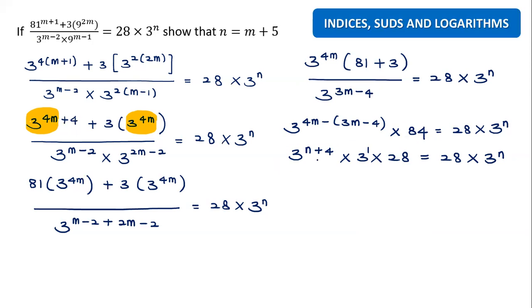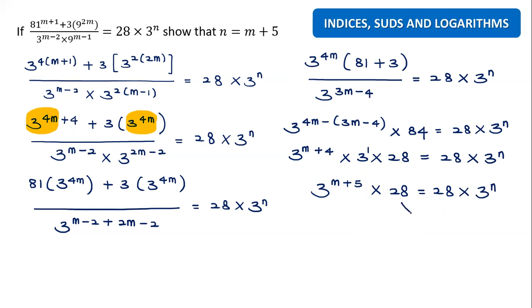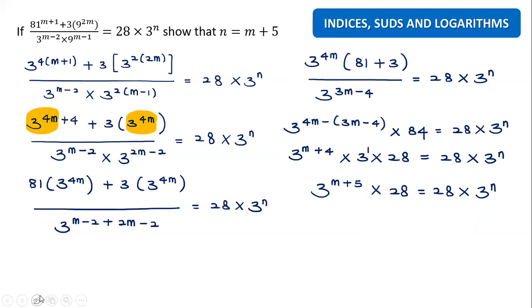The index here is 1, and times means plus. So combining gives 3 to the power m plus 5. Times 28 equals 28 times 3 to the power n. You can see both sides are already equal — the 28 and 28 are equal, so the indices must also be equal. Therefore n equals m plus 5, which is what we needed to show.